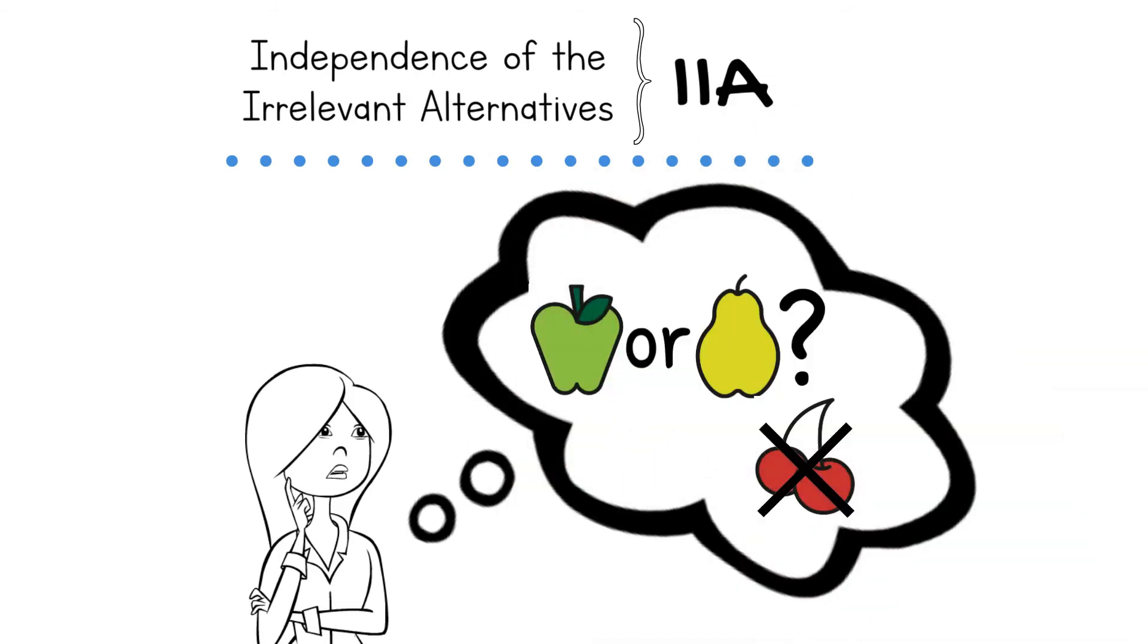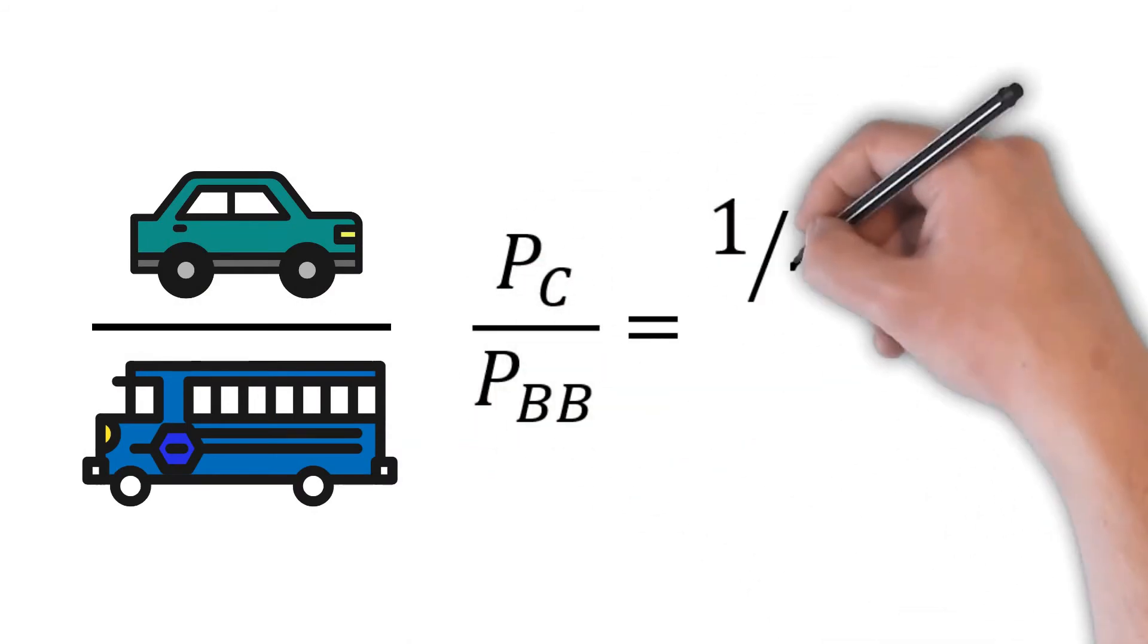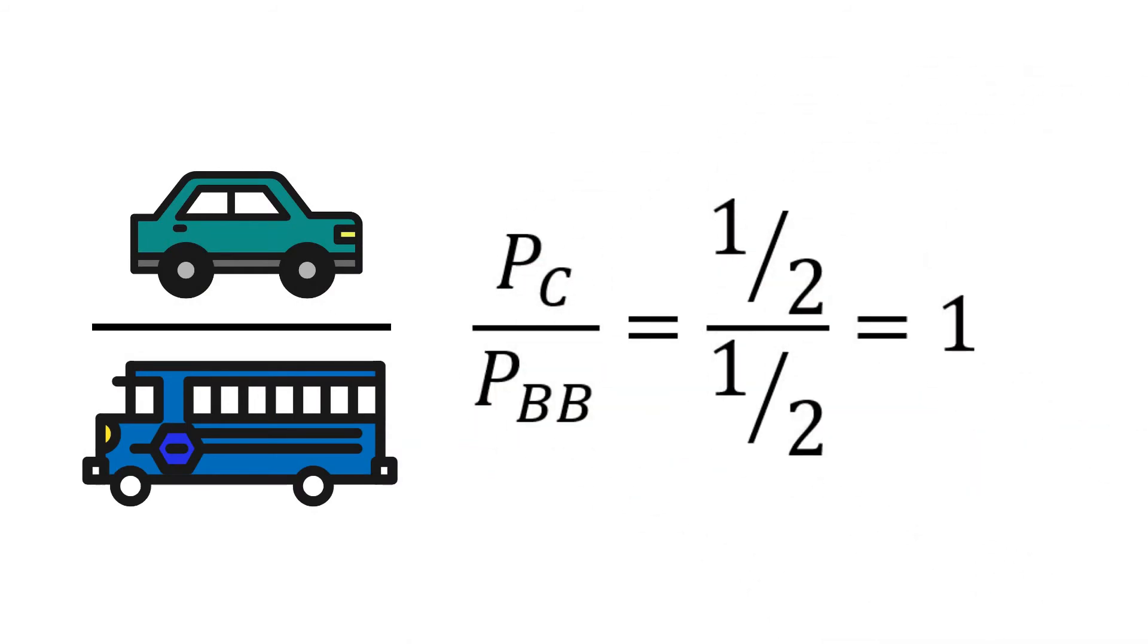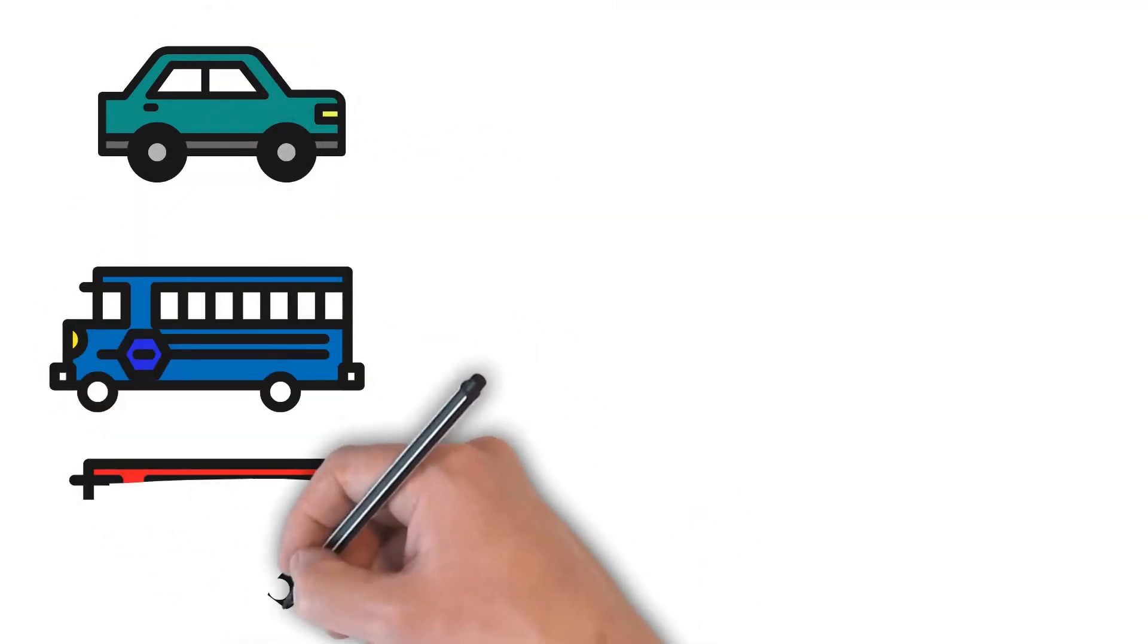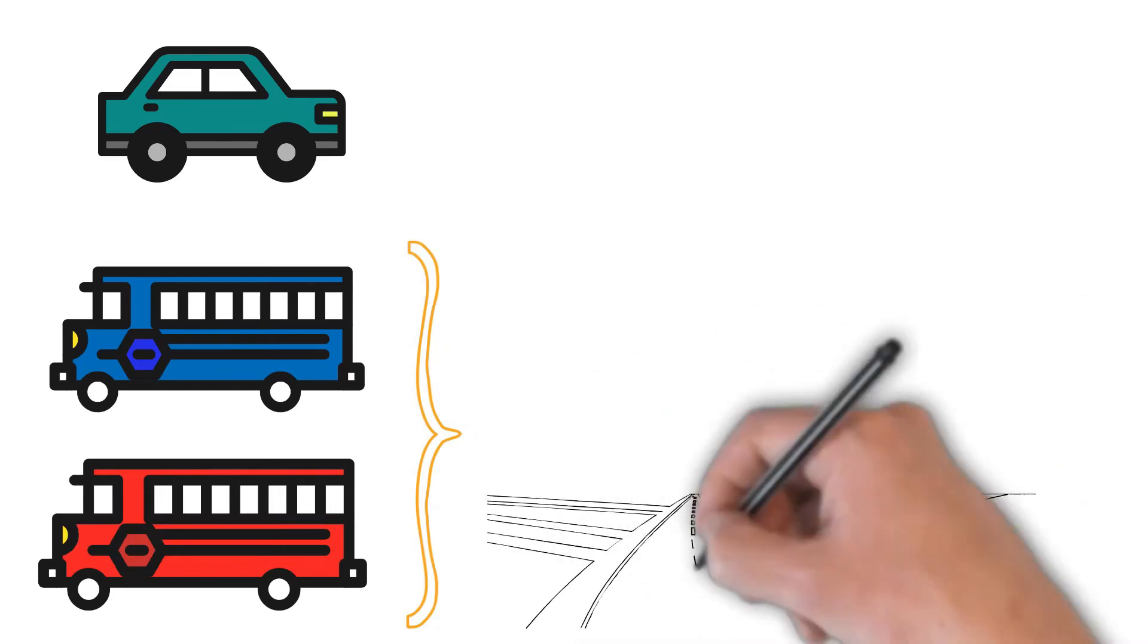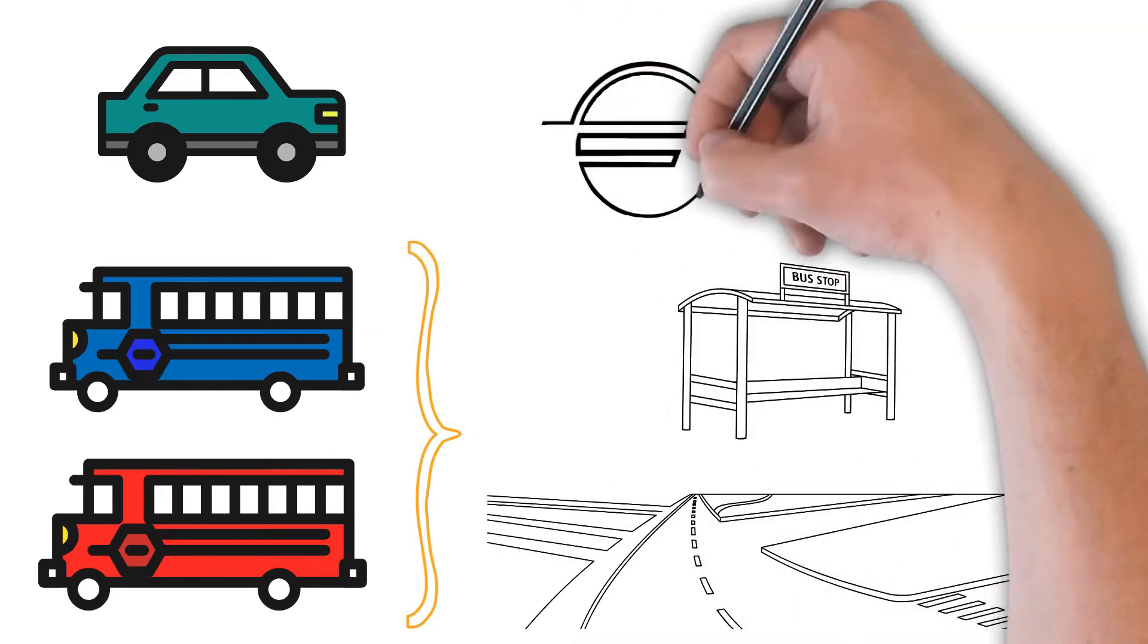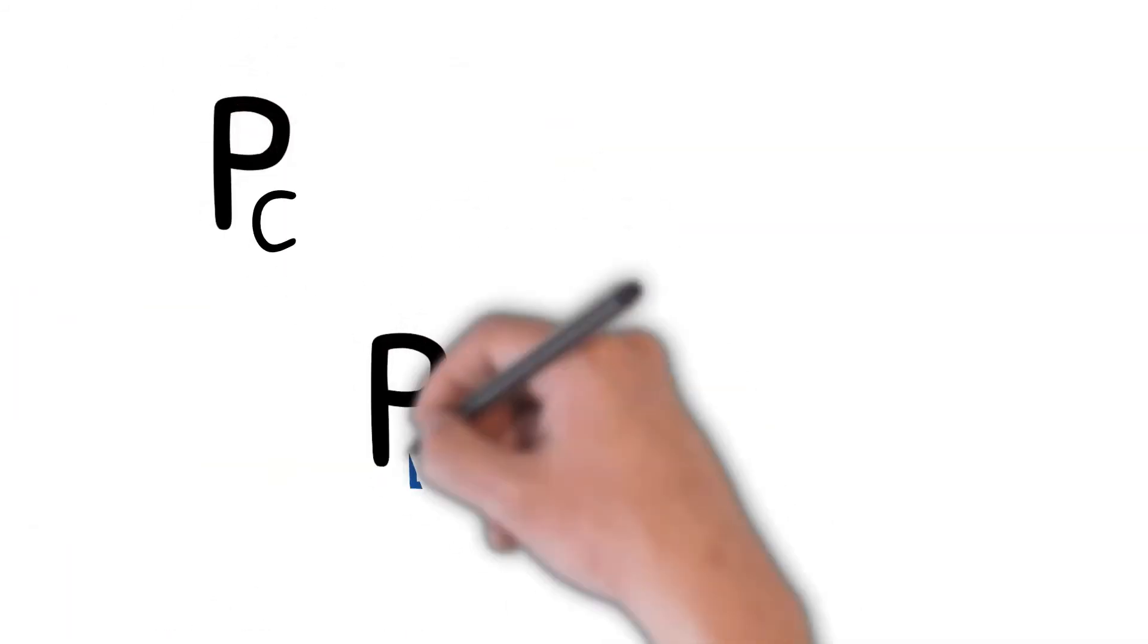Now suppose that a new bus joins the choice set, this time in red, which will have exactly the same attributes as the blue bus: same routes, stops, cost, and schedule. The only difference will be the color. What would then be the probability for our three alternatives?